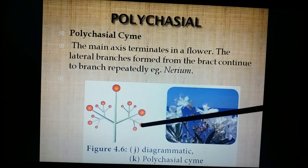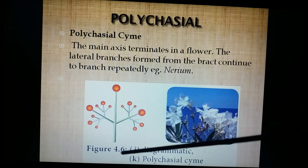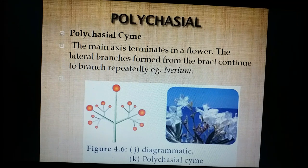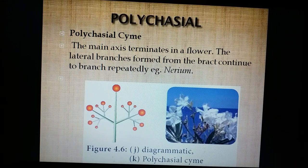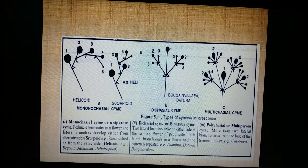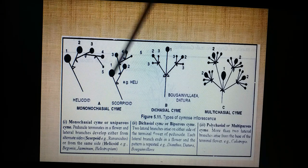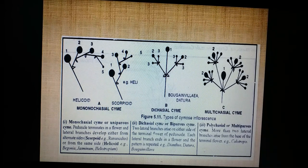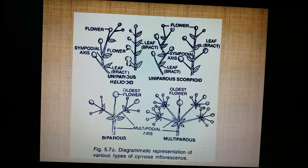The last among cymose types is polychasial cyme: when the peduncle terminates with a flower, more than two branches develop. This is called polychasial cymose inflorescence, and the example is Nerium. Thus we have seen the various types of cymose inflorescence: solitary, simple cyme, monochasial (helicoid and scorpioid), dichasial, and polychasial.